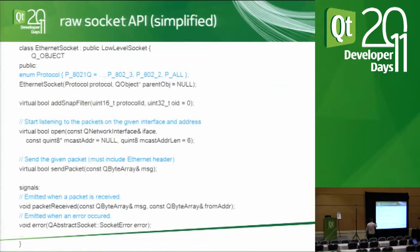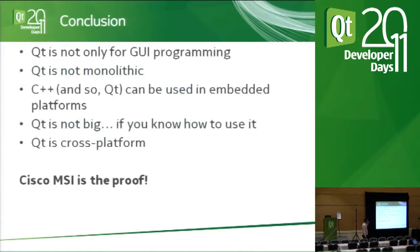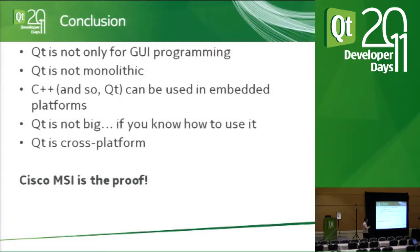Let me wrap up. I hope I've convinced you that Qt is not only for GUI programming — we are the example. That Qt is not monolithic. That C++ and Qt can be used on embedded platforms; the preconceived idea about C being mandatory is not really true if you know what you're doing. Qt is not big if you know how to use it, tweak it, and compile it. And Qt is cross-platform. The living proof of all this is our system, Cisco MSI. Thank you very much. I'll take questions now.